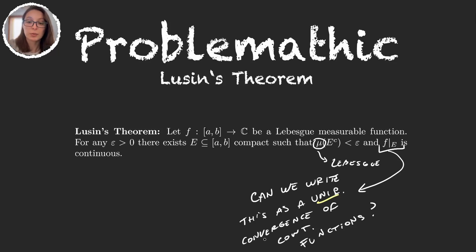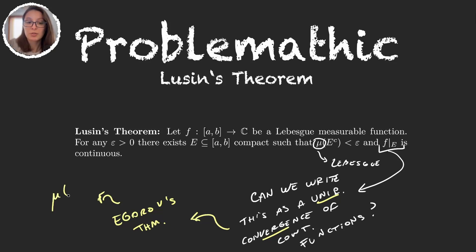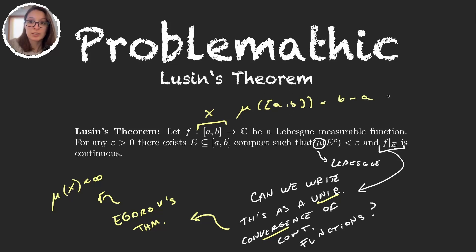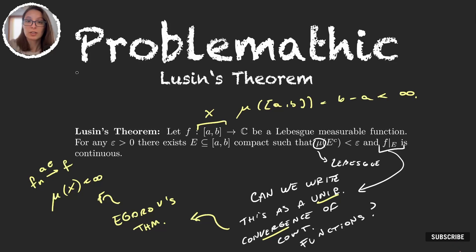So how do we get this uniform convergence? The idea will be to use a very nice theorem we saw a few videos ago: Egorov's theorem. Egorov's theorem required the measure of the space to be finite — but that's not a problem, because our space is [a, b], and the Lebesgue measure of [a, b] is just b minus a, which is finite. Another thing we needed for Egorov's theorem was a sequence of functions converging to f almost everywhere. Then, given some epsilon, it gives us a very large set with complement of measure less than epsilon, such that the sequence converges uniformly to f.